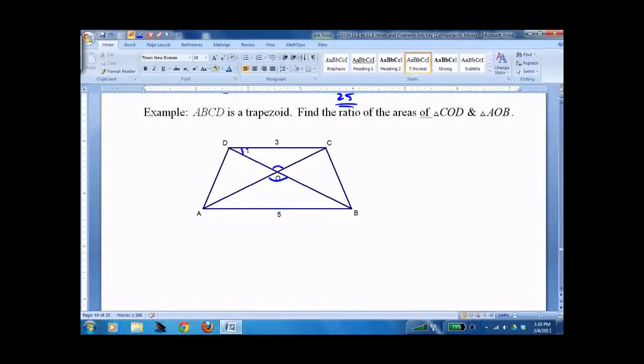These angles are congruent, and these angles are congruent. First pair by vertical angles, second pair by alternate interior angles. So if that's the case, we have two similar triangles by angle-angle. We know the base of COD is 3 and we know the base of AOB is 5.